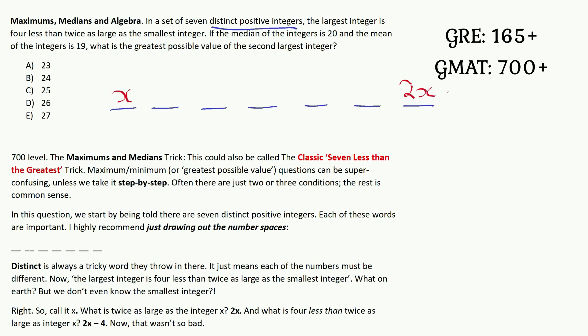Twice as large as the smallest integer means 2x, but it says four less than twice as large, so that'll be 2x minus 4. It's almost like reading the sentence from the back helps us to understand it. So that's the smallest integer and the largest integer sorted out. Now let's carry on.